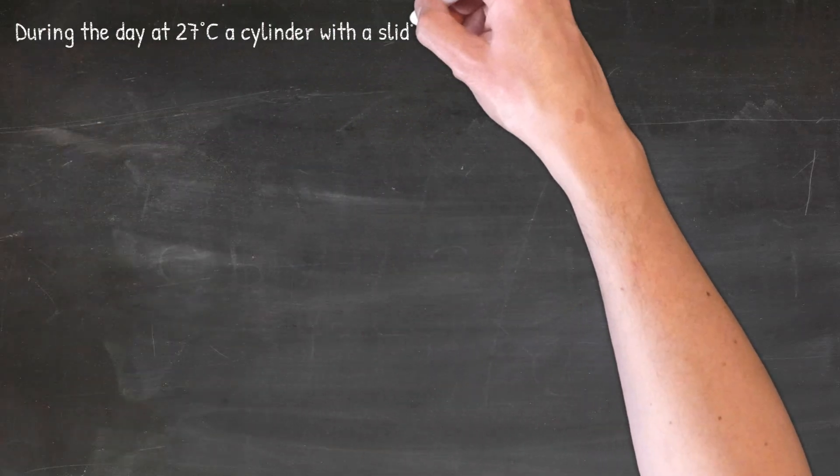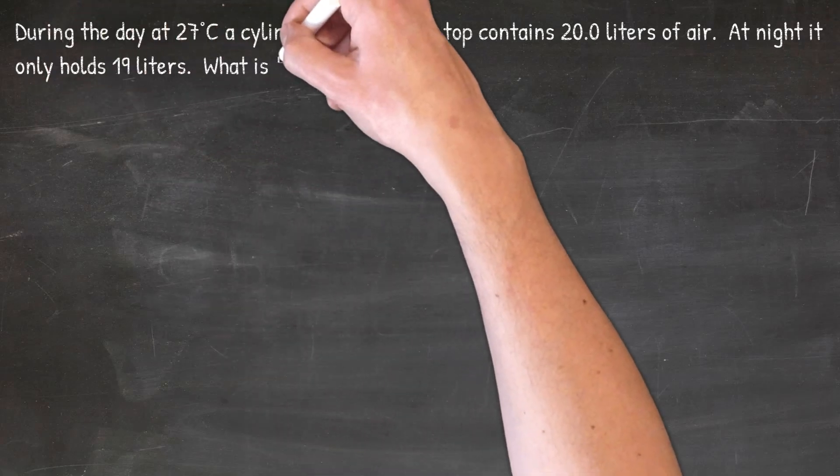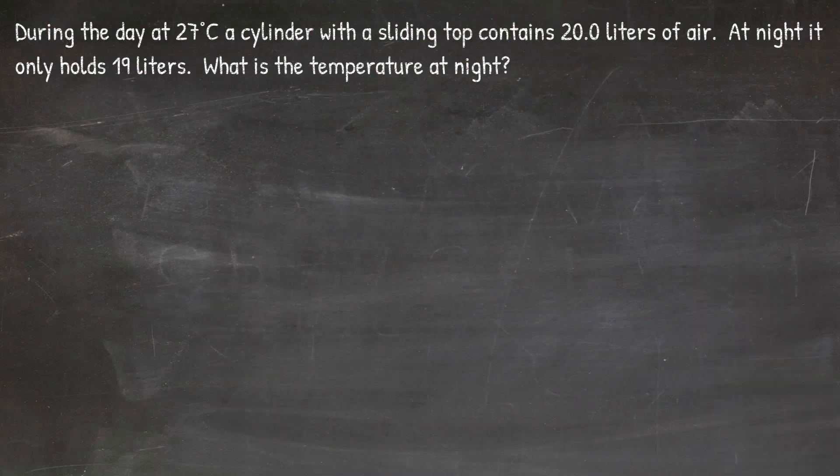In our next problem, we're going to answer the question: During the day, at 27 degrees Celsius, a cylinder with a sliding top contains 20 liters of air. At night, it only holds 19 liters. What is the temperature at night? Take a moment now and pause this video and see if you can solve the problem, then come back and check your answer.